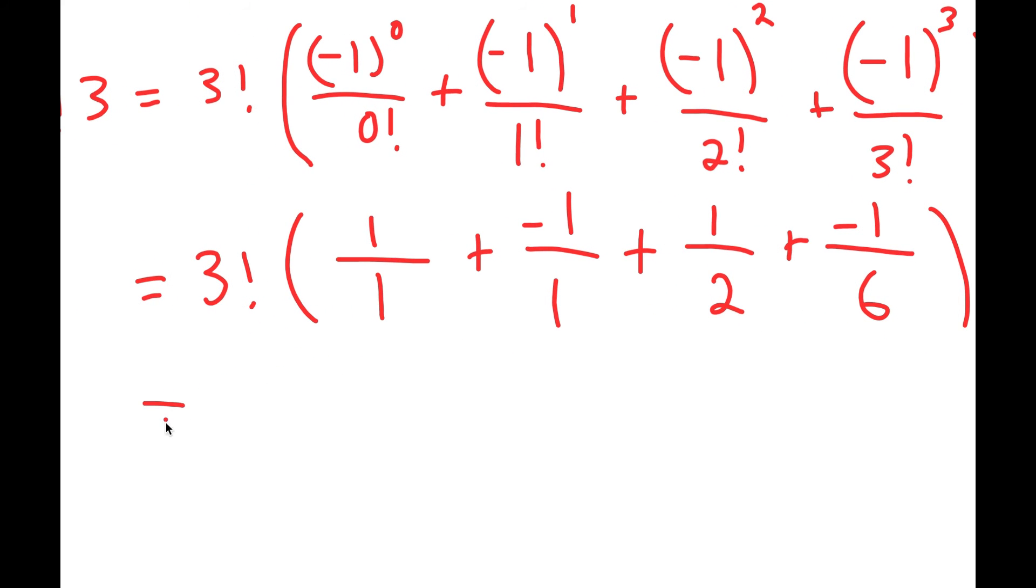So now three factorial is six. So I get six times one over one plus negative one over one plus one half plus negative one over six.